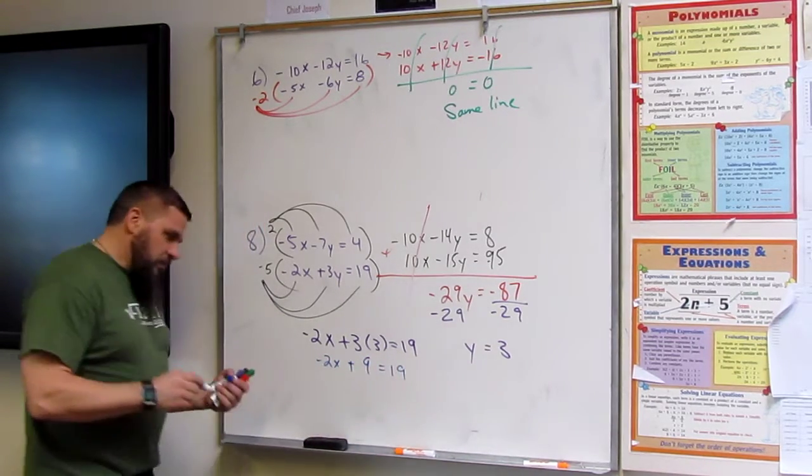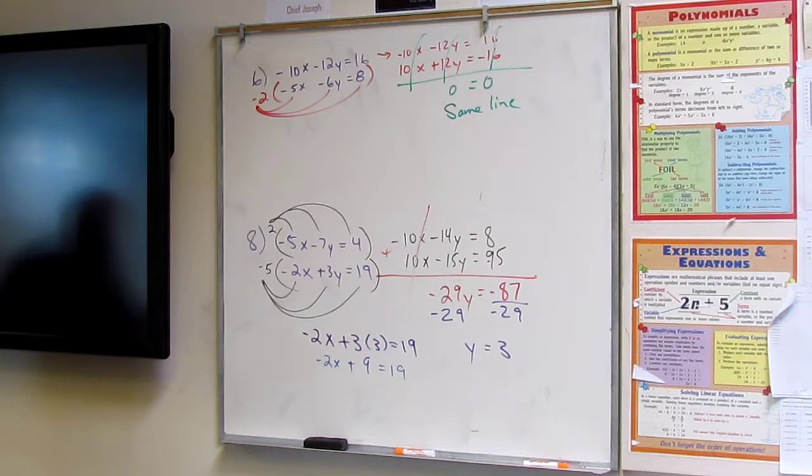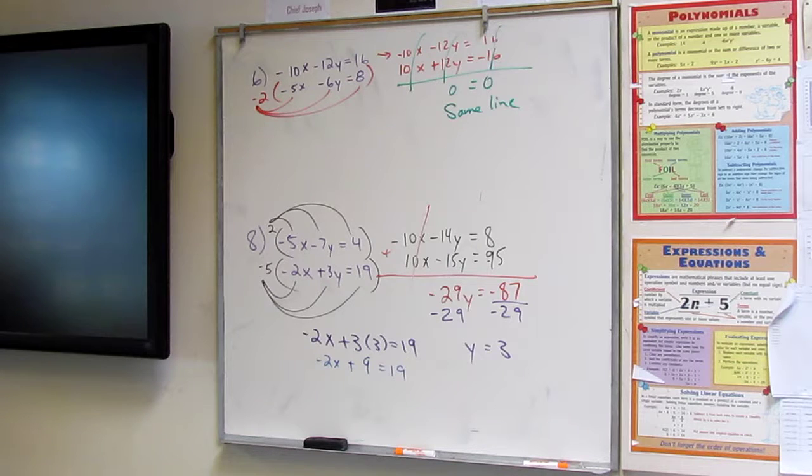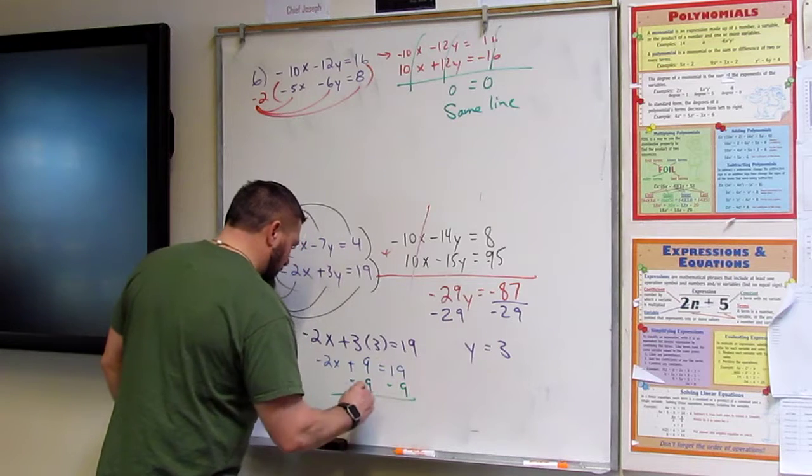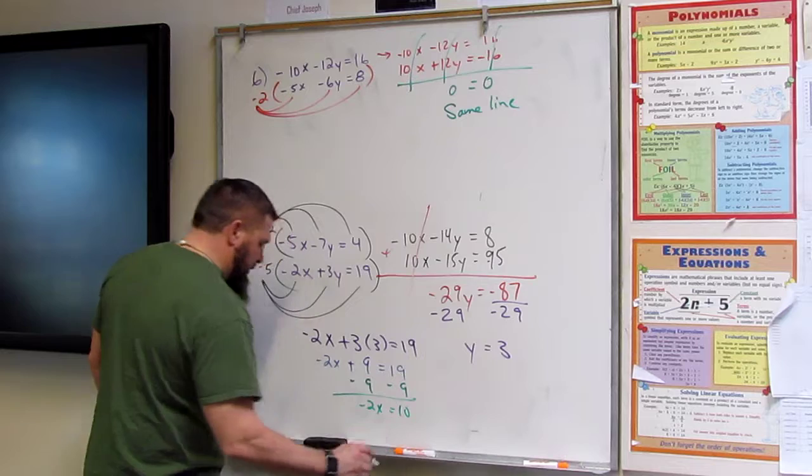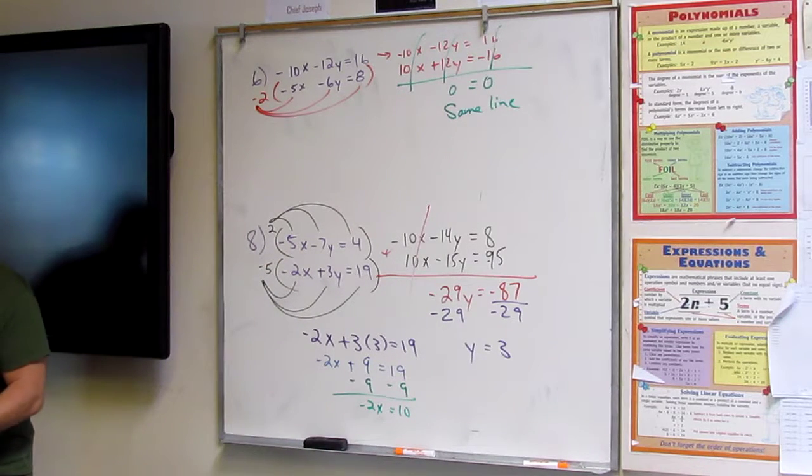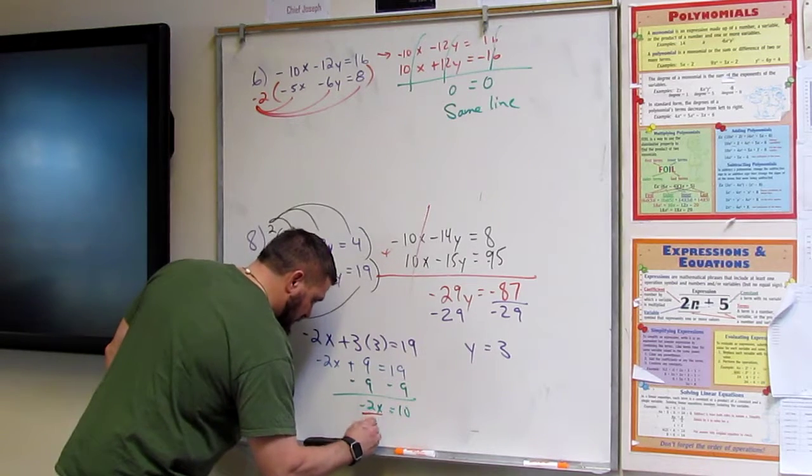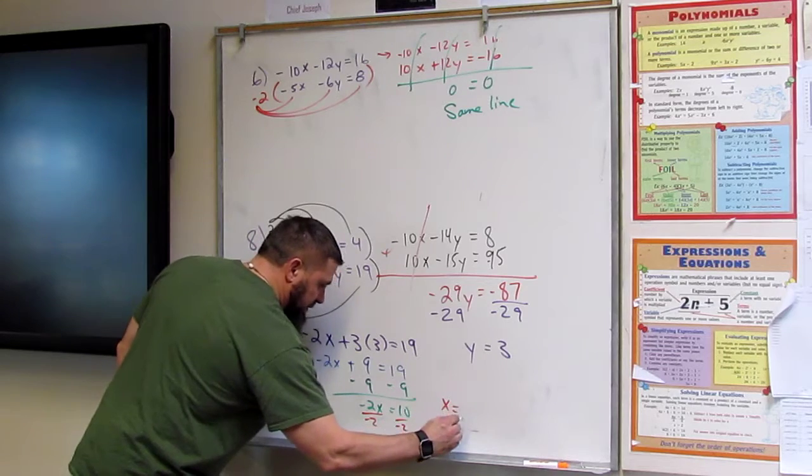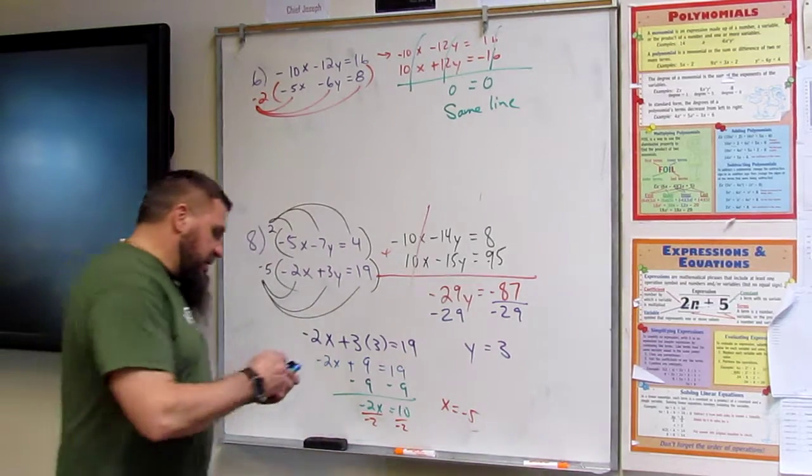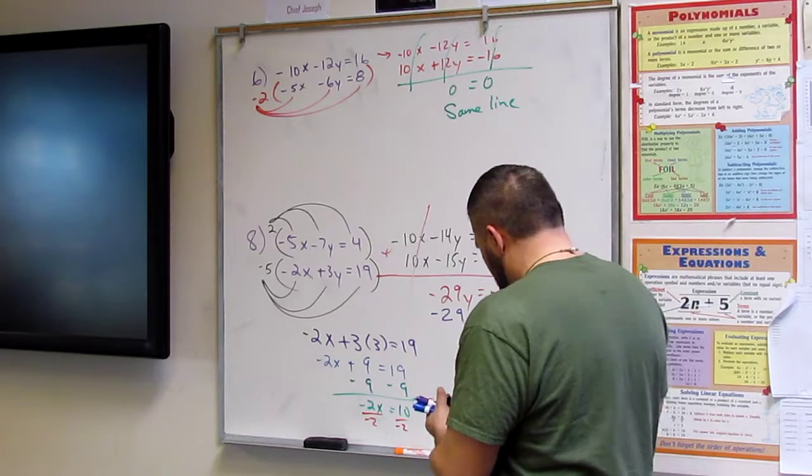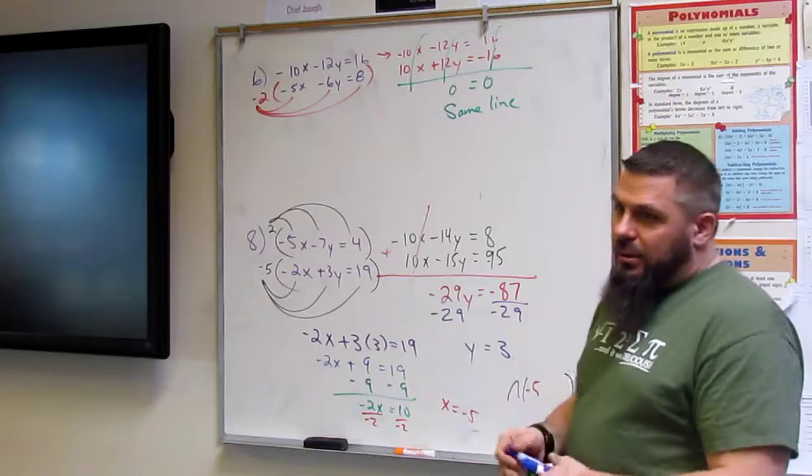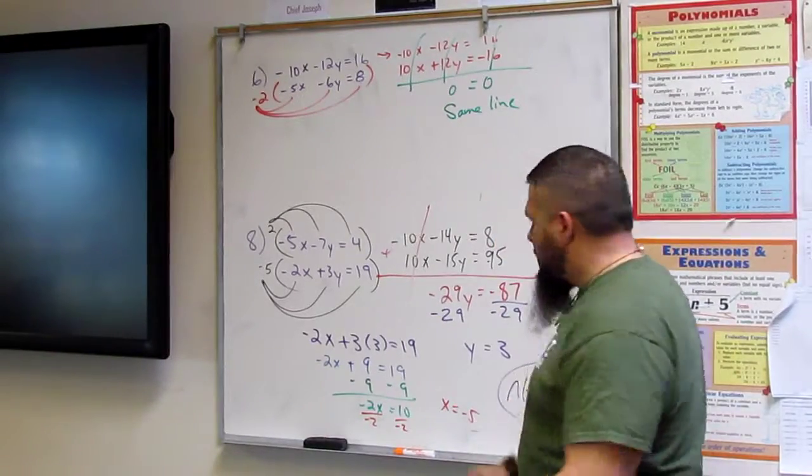How do I solve for this? How do I start this? Subtract nine. Good. Subtract nine. Negative two X equals ten. Now what? Divide negative two. So X is equal to negative five. So what is my intercept? Negative five and three. Negative five and three. Three. Yeah.